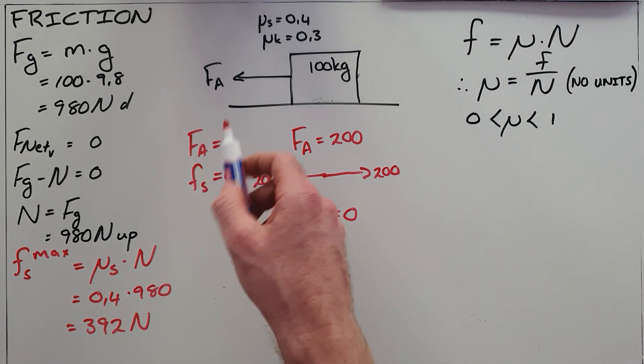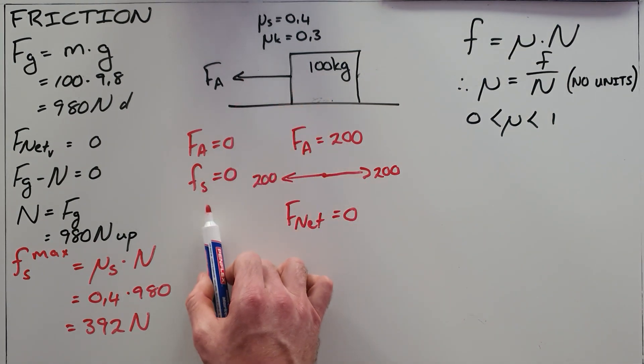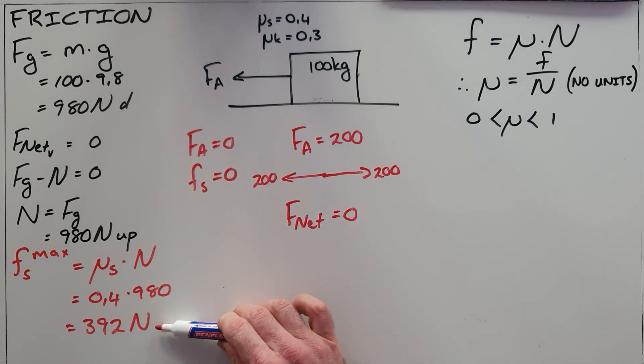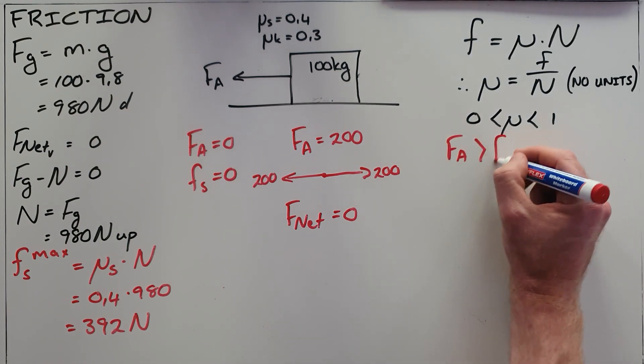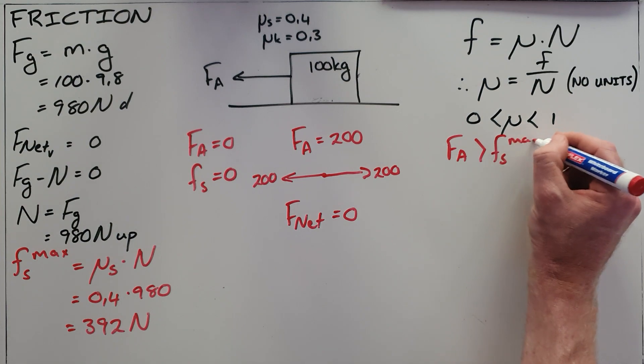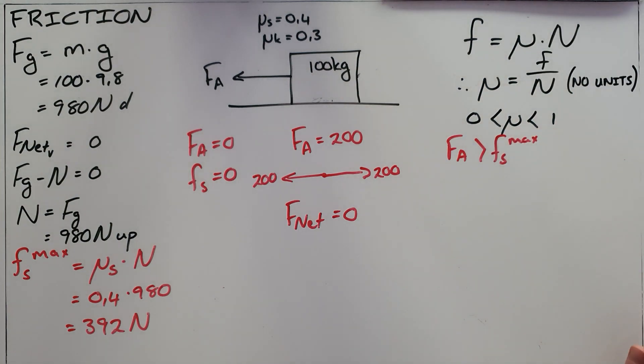This applied force could be any value between zero and 392 before this object would move. The applied force would have to be greater than the static friction maximum in order for this object to be moving.